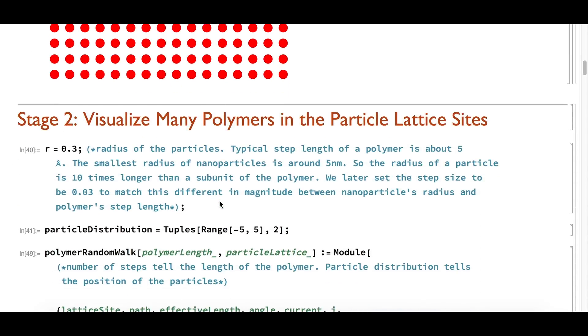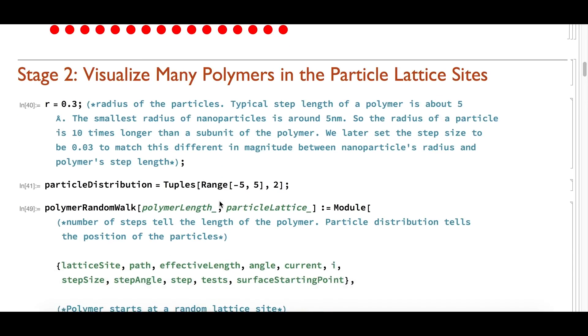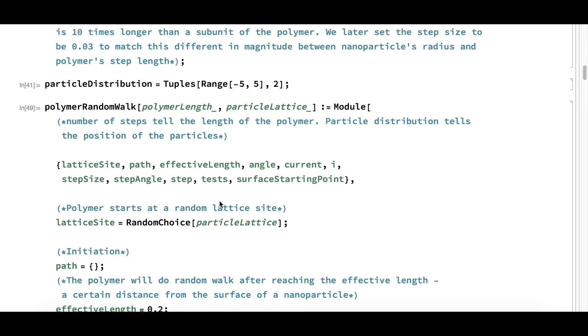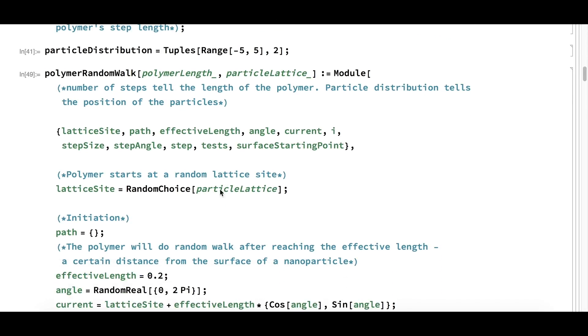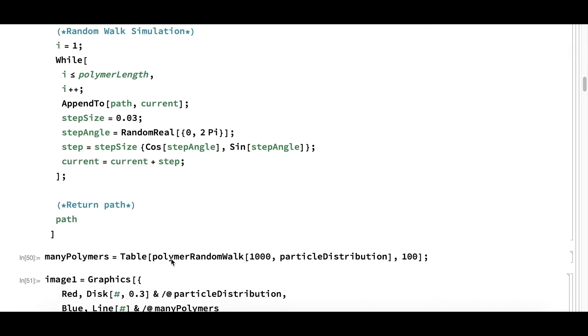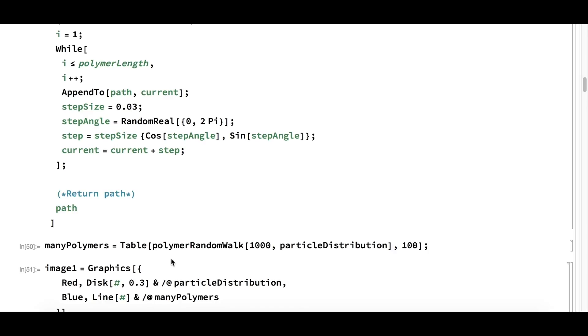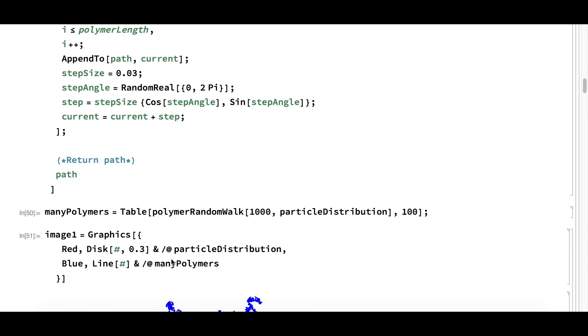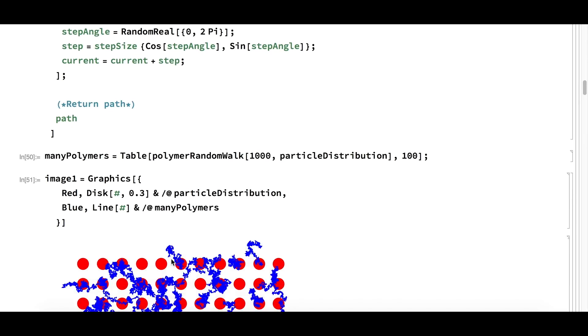In stage 2, we want to generate many polymers and visualize how they distribute and interact with particles inside a lattice. To do so, we combine all the steps in stage 1 into one function, PolymerRandomWalk, which takes in the polymer length and the lattice of particles and returns the polymer path. We will generate 100 random walk polymers of 1000 subunits by using table and visualize the polymers and particle matrix using graphics.